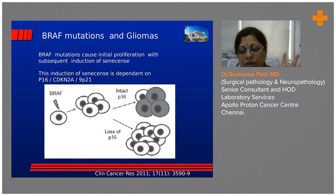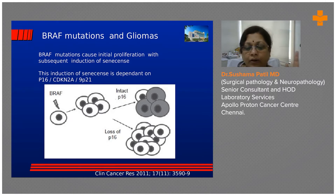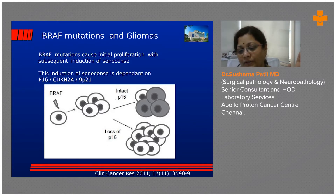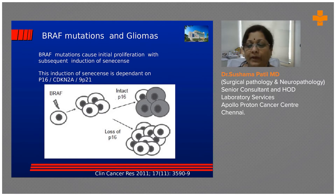There is a new entity introduced in the 2021 WHO classification called high-grade glioma with piloid features. We don't know whether these start as such or transform over time, but there is a subset of tumors that have pilocytic morphology yet behave aggressively. It is a small subset, but they exist.